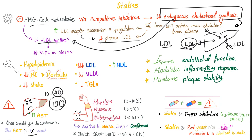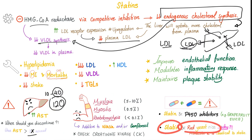Other side effects: myalgia, myositis, rhabdomyolysis. Muscle toxicity is additive with niacin or gemfibrozil — combining niacin with statins increases risk of myositis; combining fibrates with statins increases risk of muscle problems. Check serum creatinine kinase to assess muscle health. Drug-drug interactions: do not combine statins with CYP450 inhibitors or grapefruit juice. Do not combine statins with red yeast rice — it contains monacolin K, which is identical to statin, effectively doubling the dose and side effects.